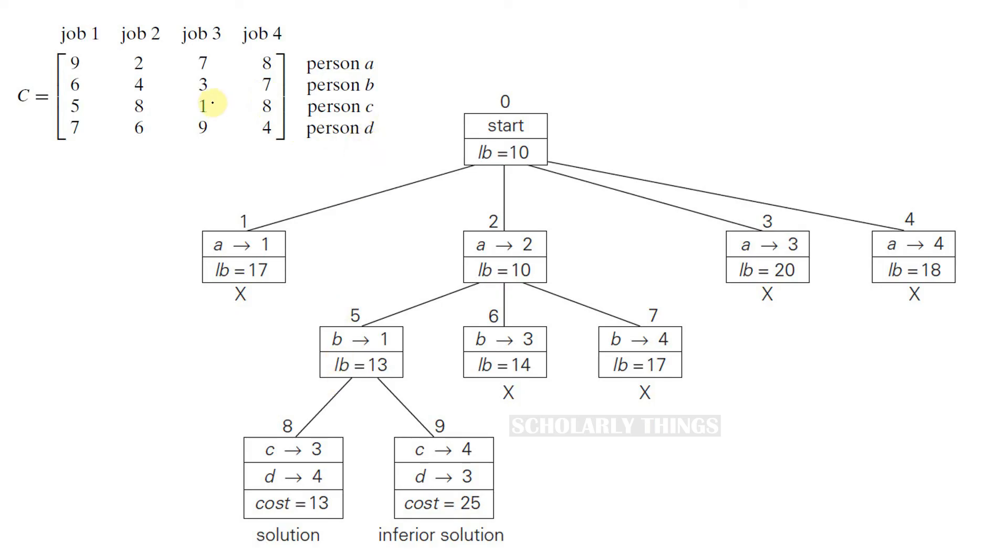Let's check that. If we assign job 3 to person C, the remaining one is job 4 to be assigned to person D. In that case the cost will be 13. Since we have to consider all the branches, let's see what happens if we assign job 4 to person C. In that case we need to assign job 3 to person D, and the cost will be 25.